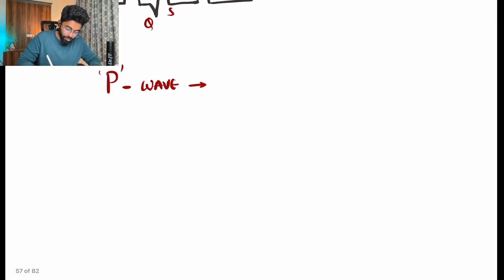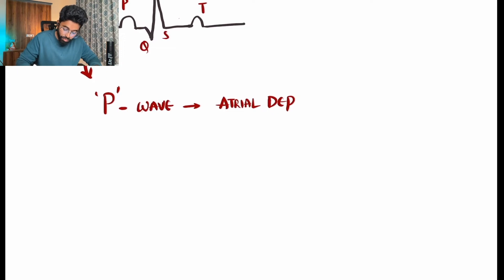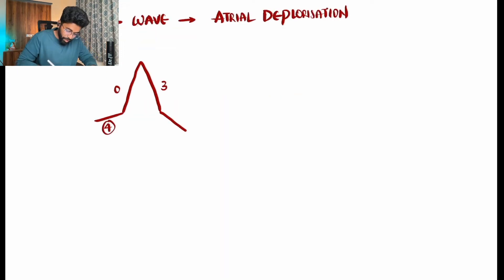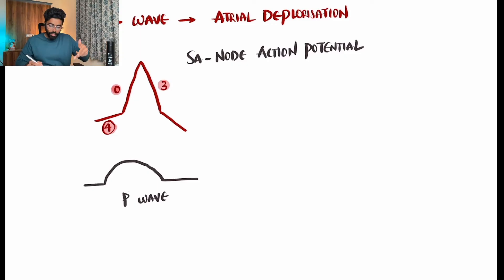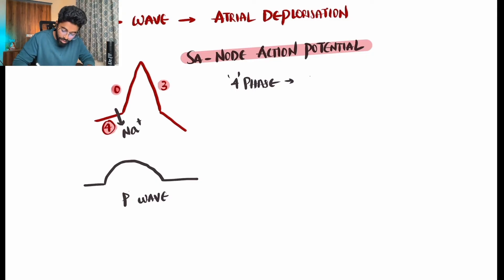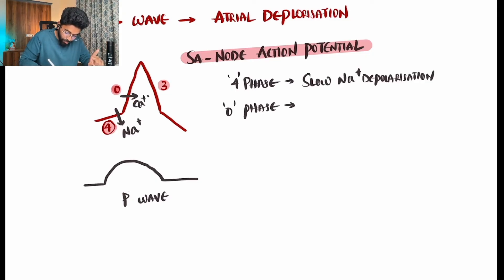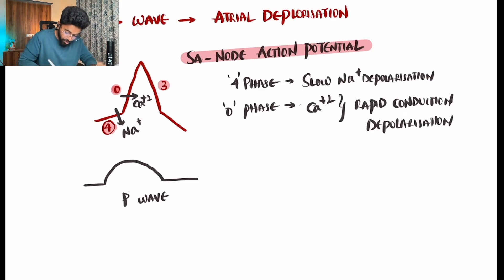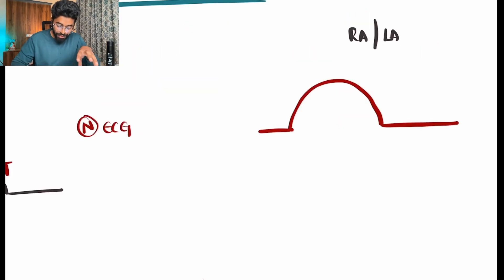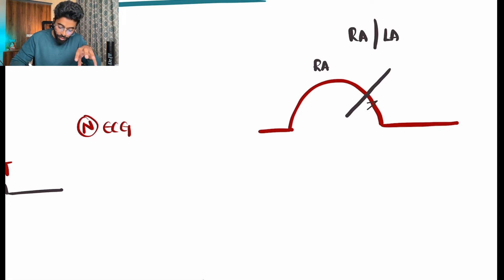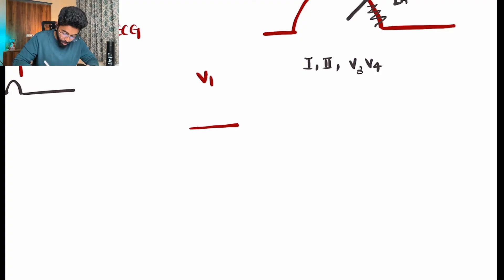The P wave represents atrial depolarization — a positive current giving a positive deflection. The SA nodal action potential phases are: Phase 4 — slow sodium depolarization; Phase 0 — rapid calcium depolarization; Phase 3 — potassium repolarization. Seventy percent of the P wave belongs to the right atrium and only 30 percent to the left atrium.